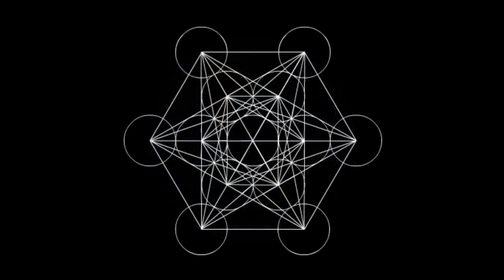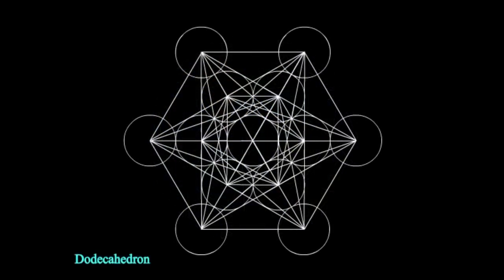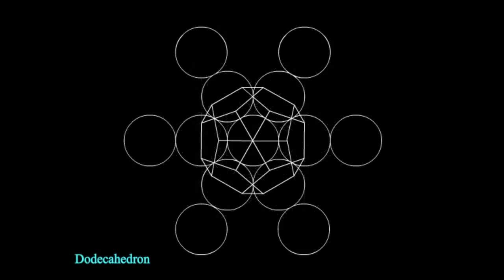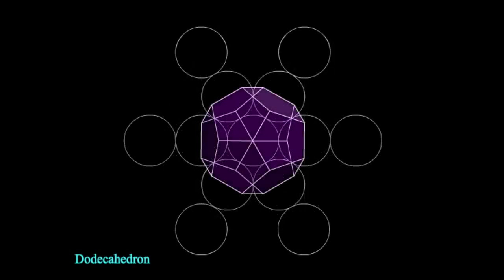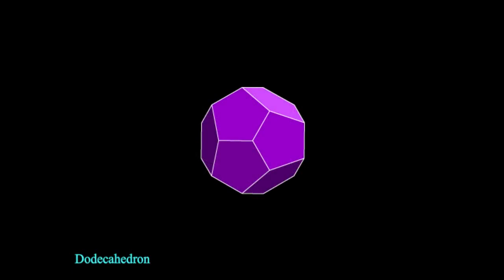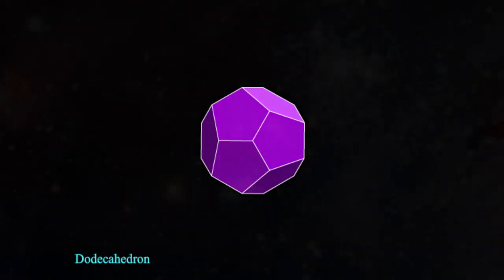So moving on to the last of the platonic solids, the dodecahedron, what you'll find here is something a bit different. The only way we can express this shape through a two-dimensional perspective is by adding these lines here, which is a bit different to how we've actually created the other shapes. You see, technically, to get these lines, you have to make this shape three-dimensional. So therefore, this shape represents moving into another dimension. It represents the ether, and it represents the cosmos and space.